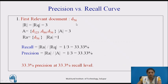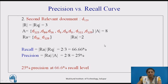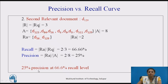The first relevant document is D56. In the answer set we have 3 documents, so recall will be 1 upon 3, that is 33.3%, and precision will also be 1 upon 3, that is 33.3%. For the second relevant document D129, there are 8 documents in the answer set. So recall will be 2 upon 3, that is 66.6%, and precision will be 2 by 8, that is 25%. So 25% precision at 66.6% recall.